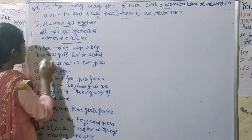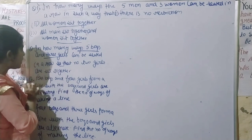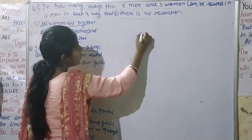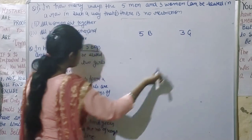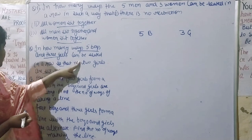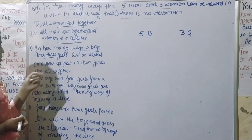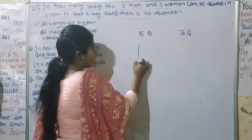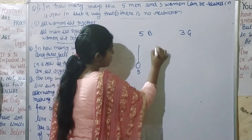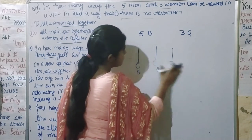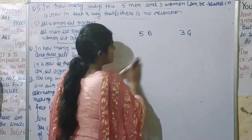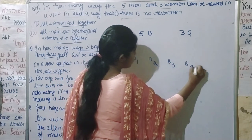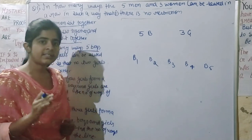Next problem: in how many ways can 5 boys and 3 girls be seated in a row so that no 2 girls are seated together? We have 5 boys and 3 girls. The condition is that no two girls can sit together. If the boys are seated first — positions 1, 2, 3, 4, 5 — the girls must go in the gaps between boys.